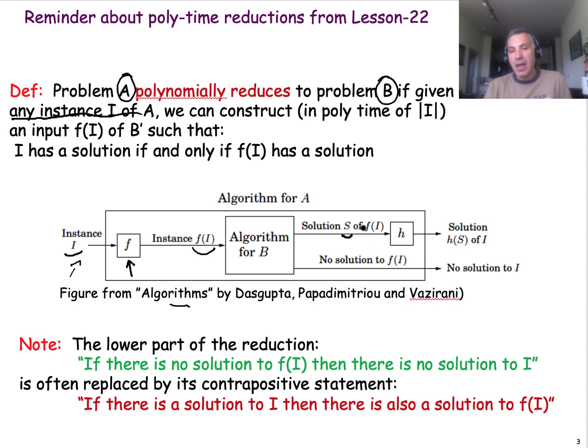On the other hand, if there is a solution for this instance of problem B, then we would like to use some kind of an inverse transformer to go from the solution of F(I) to the solution of the original problem that we started with.